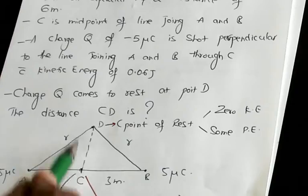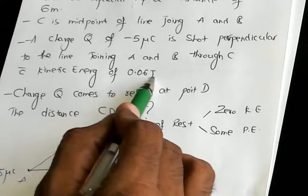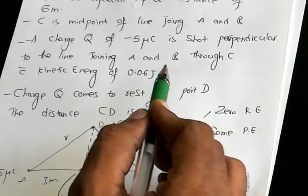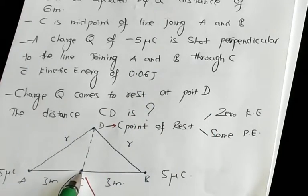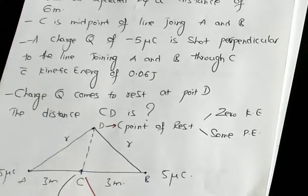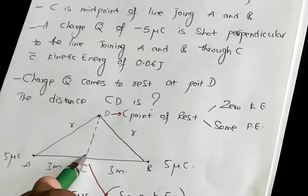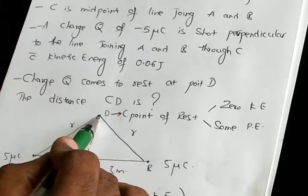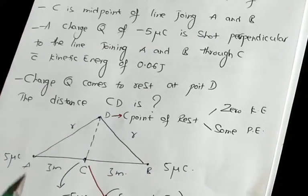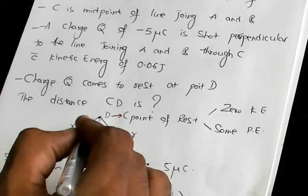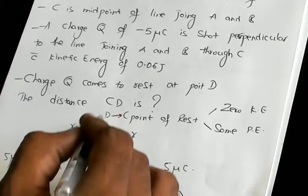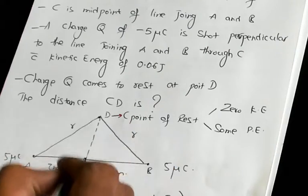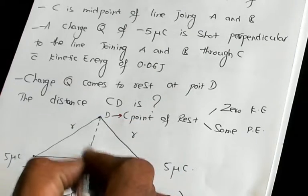You have taken a charge Q of minus 5 micro coulombs and it is shot perpendicular to the midpoint C between the line joining A and B, with a kinetic energy of 0.06 joules. After jumping, this charge Q comes to rest at point D. The examiner wants to know: what is the distance from C to D at which it has come to rest?